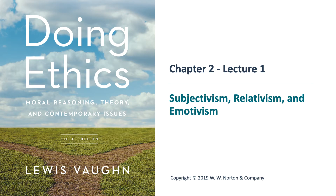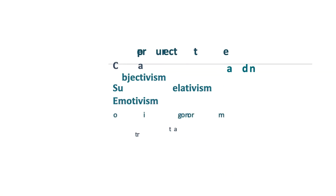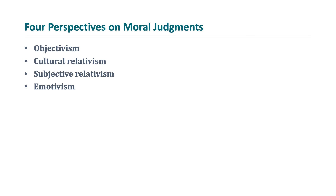These next two lectures look at chapter two of Lewis Vaughn's Doing Ethics. We're going to be looking at moral objectivism, moral subjectivism, relativism, and emotivism — four perspectives on moral judgments. For this lecture, we're going to be focusing exclusively on objectivism. In the next lecture, we'll look at cultural relativism, subjective relativism, and emotivism.